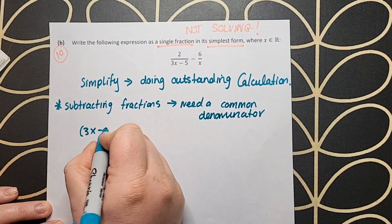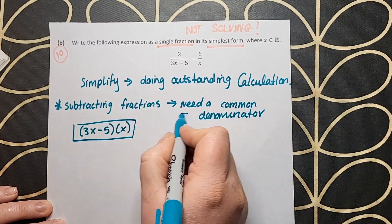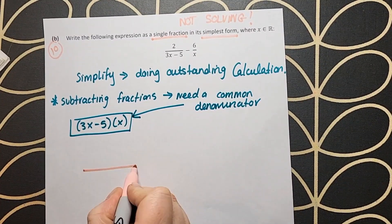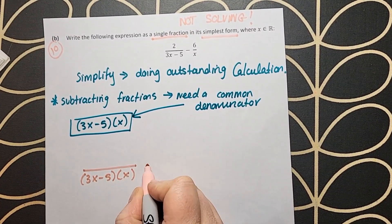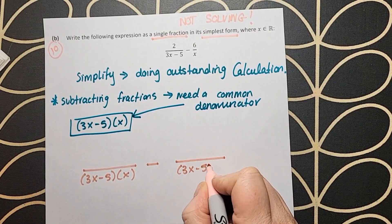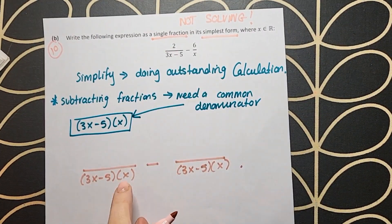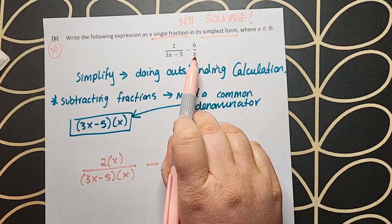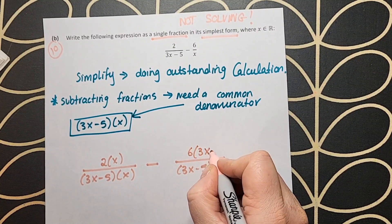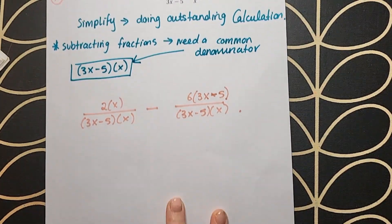How do you subtract fractions? You need a common denominator. Because we have variables or x's underneath the line in the denominator space, your only option is to multiply them together to get the common denominator.